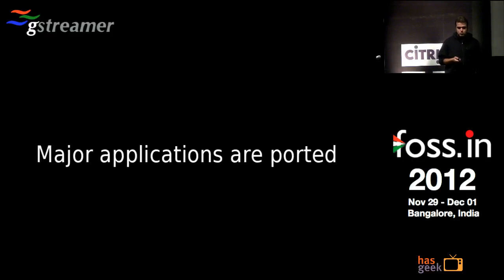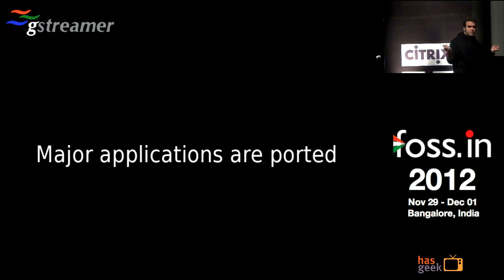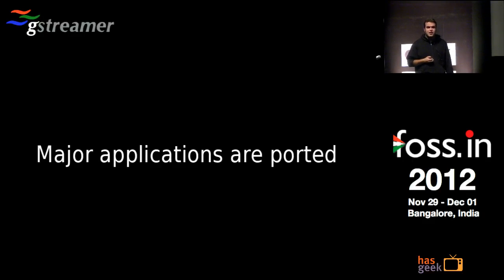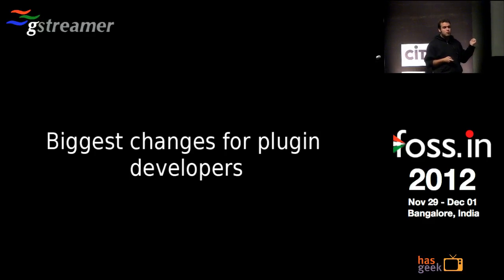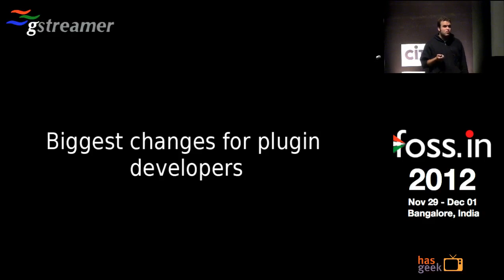All major applications have been ported by now: Totem, Rhythmbox, Rygel, DLNA suites, Empathy for video calls, Shotwell, and others. In GNOME 3.6, the latest release in Fedora 18, almost everything uses GStreamer 1.0. For application developers the API has barely changed — it's mostly a matter of recompiling. Plugin developers have more work because of changes to memory and buffer handling, but it's not that hard; personally I've ported over 20 different plugins, and once you do one or two it becomes very easy.